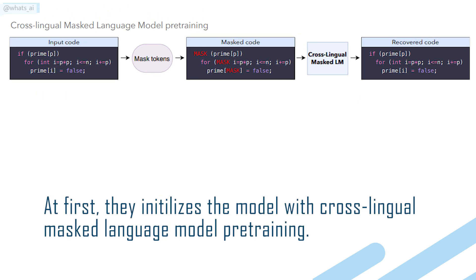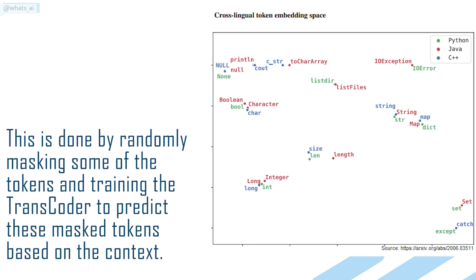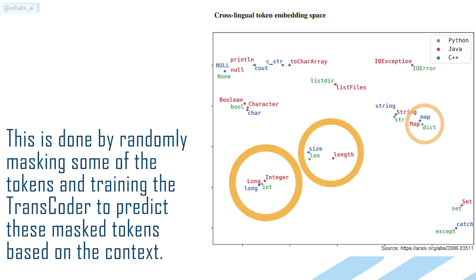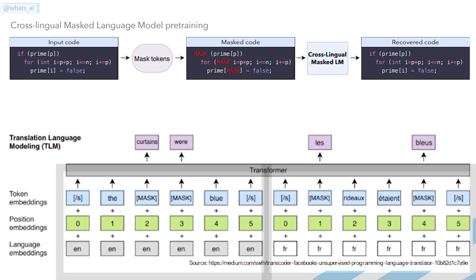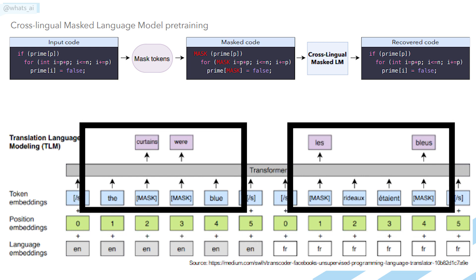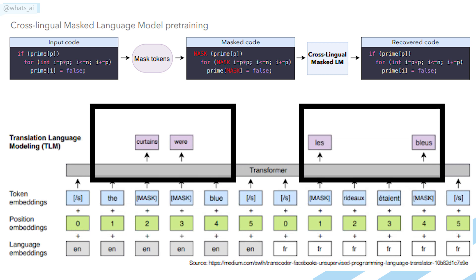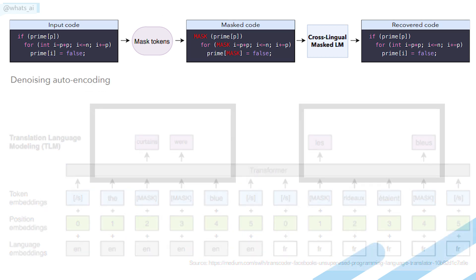At first, they initialize the model with cross-lingual masked language model pre-training. This is done by randomly masking some of the tokens and training the Transcoder to predict these masked tokens based on the context, allowing the model to create high-quality sequence representations regardless of the programming language.